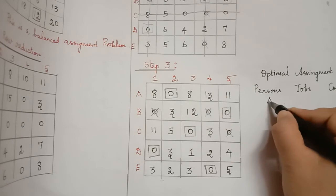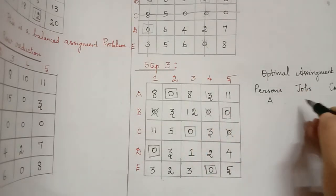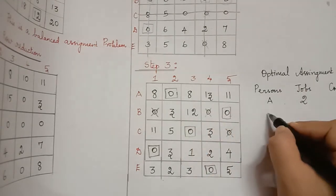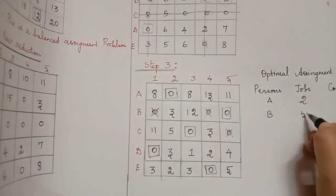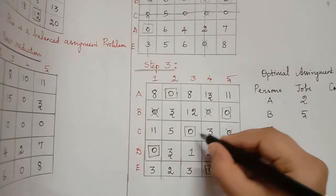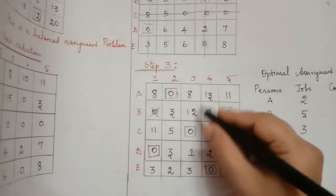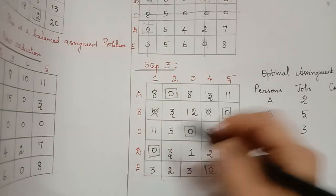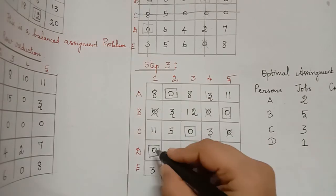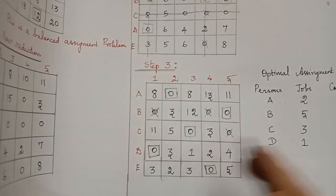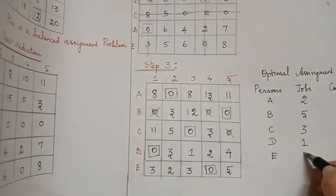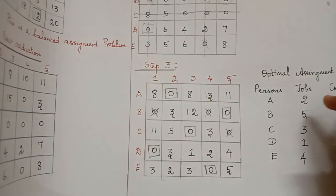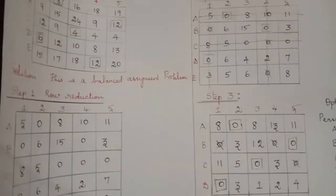Person A has been assigned job 2. Person B has been assigned job 5. Person C has been assigned job 3. Person D has been assigned job 1. Person E has been assigned job 4. We now take the cost of these jobs from the original given matrix.